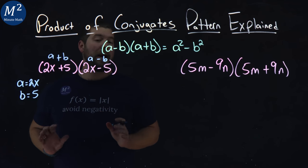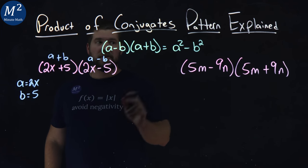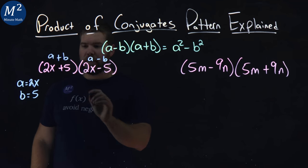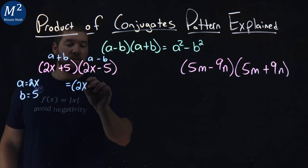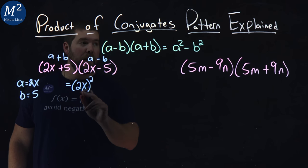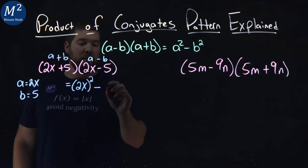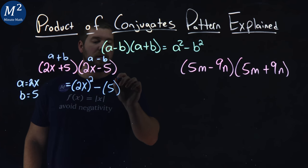Since we have that pattern set out, we can rewrite it as such: A squared minus B squared. So A being 2x, we have 2x all squared, the whole thing, minus our B value, which is 5, all squared.